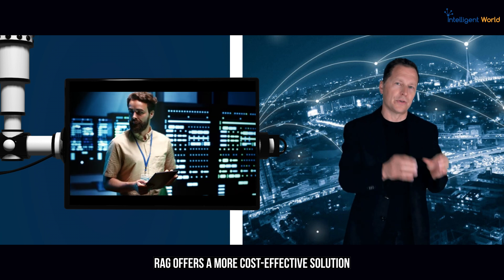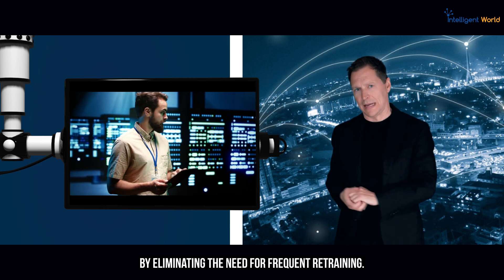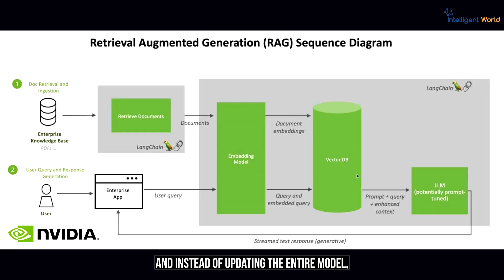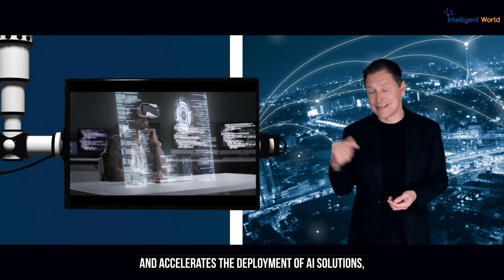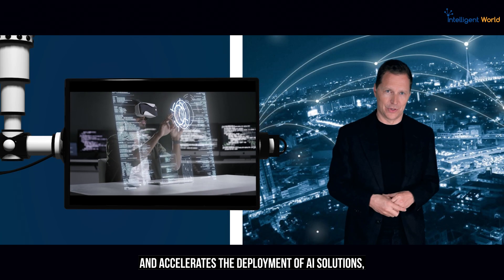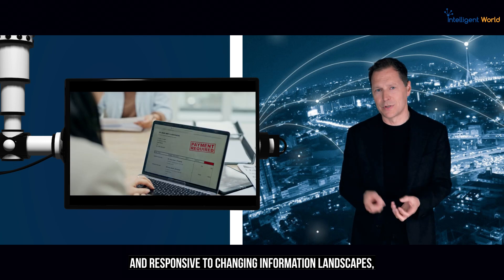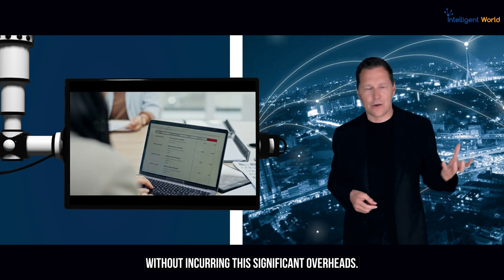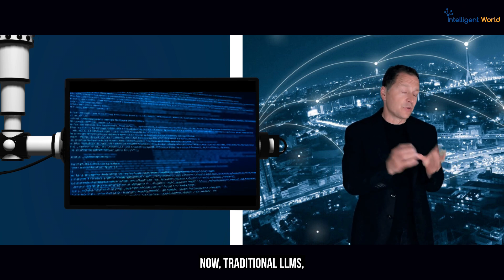RAG offers a more cost-effective solution by eliminating the need for frequent retraining. Instead of updating the entire model, RAG uses retrieval mechanisms to access the latest information on the fly. This reduces computational cost and accelerates the deployment of AI solutions, allowing organizations to remain agile and responsive to changing information landscapes without incurring significant overhead.